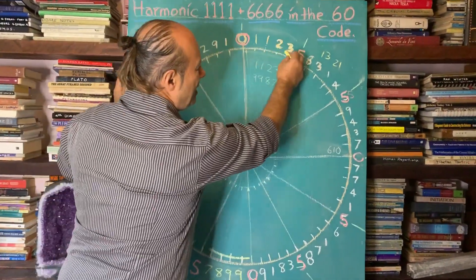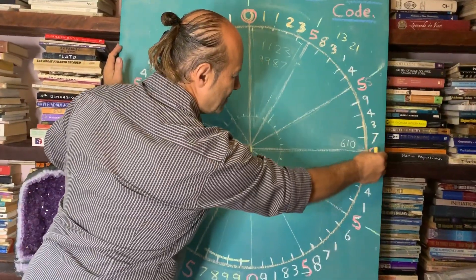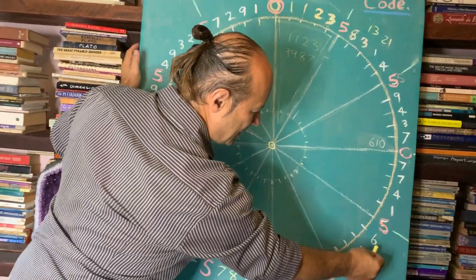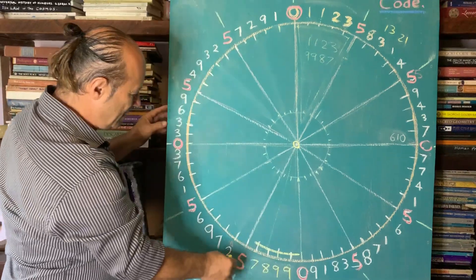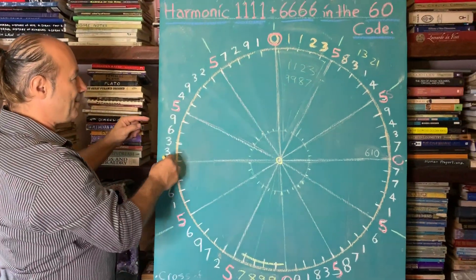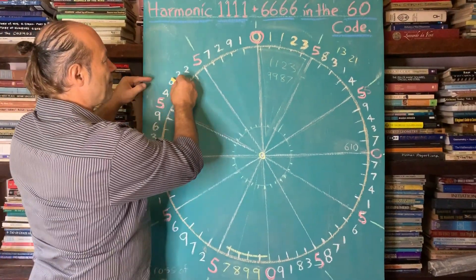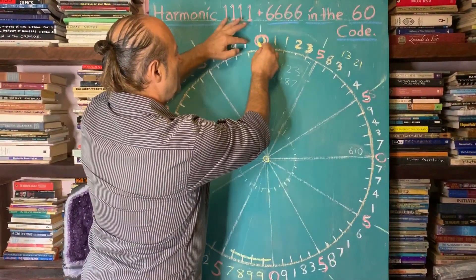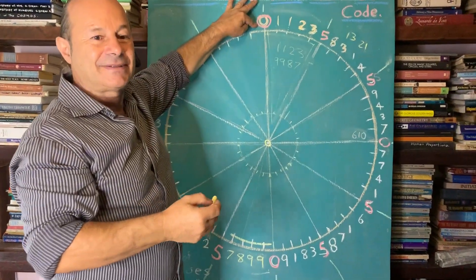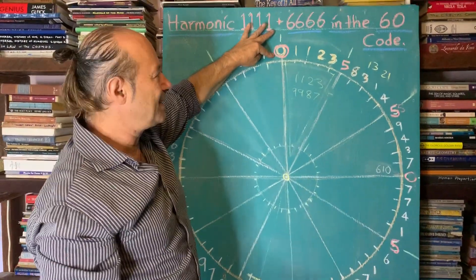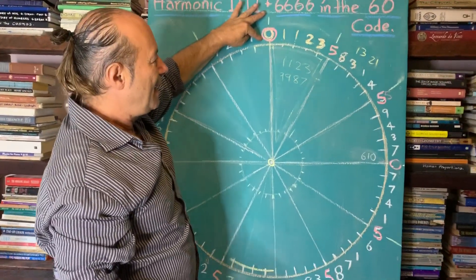You start from here, and as we study these numbers going around in the circle, we realize that it repeats all again after the 60th digit.